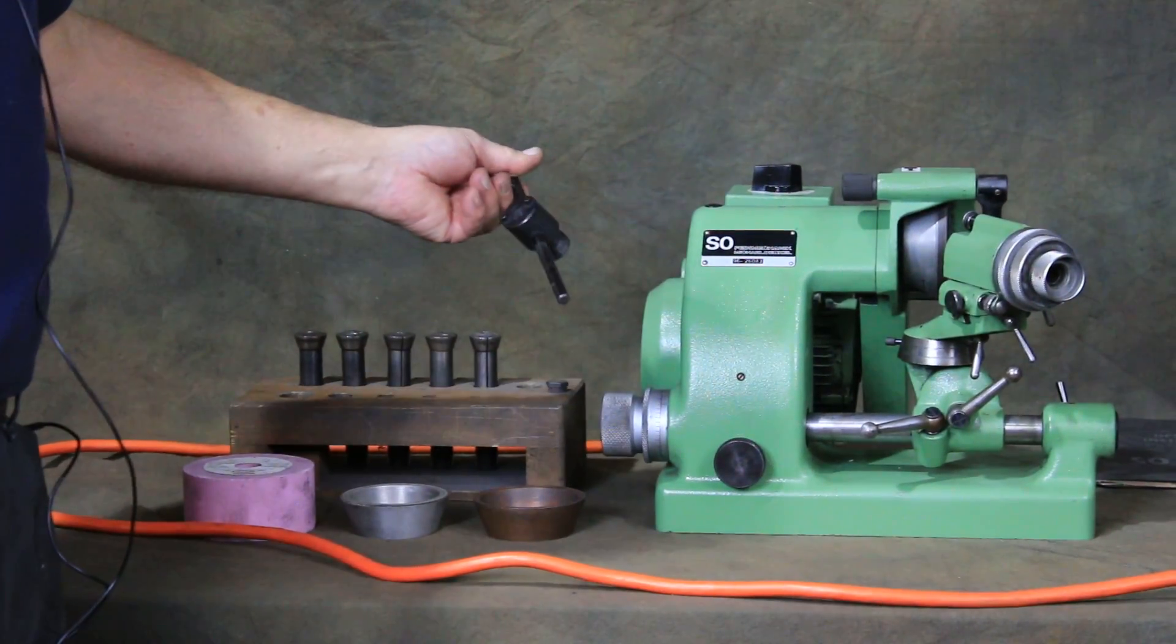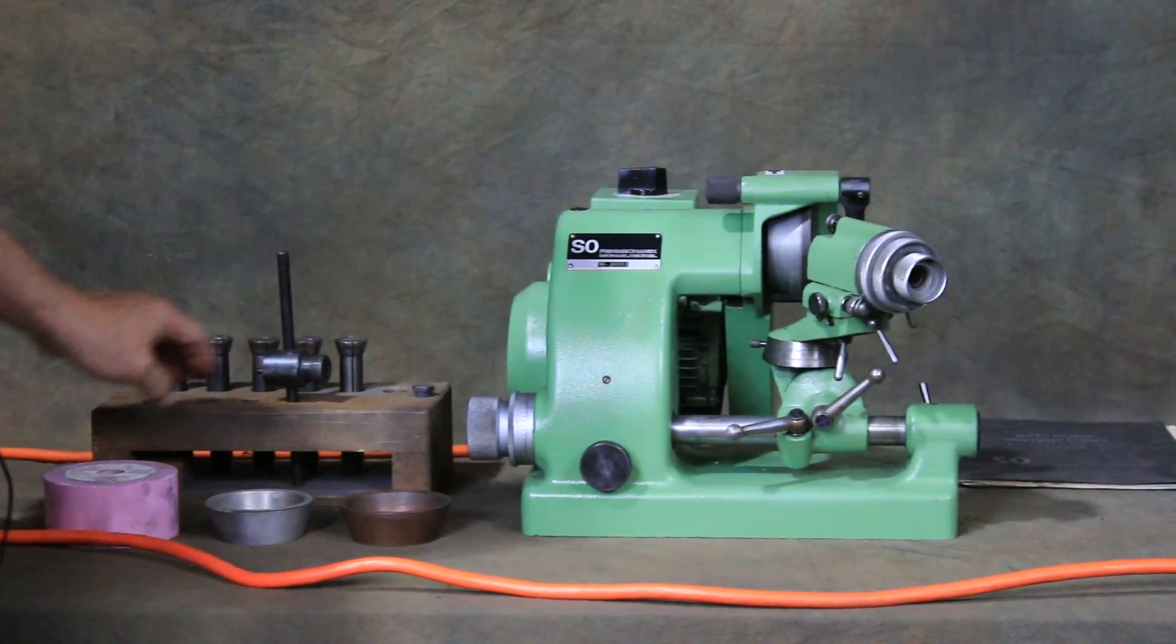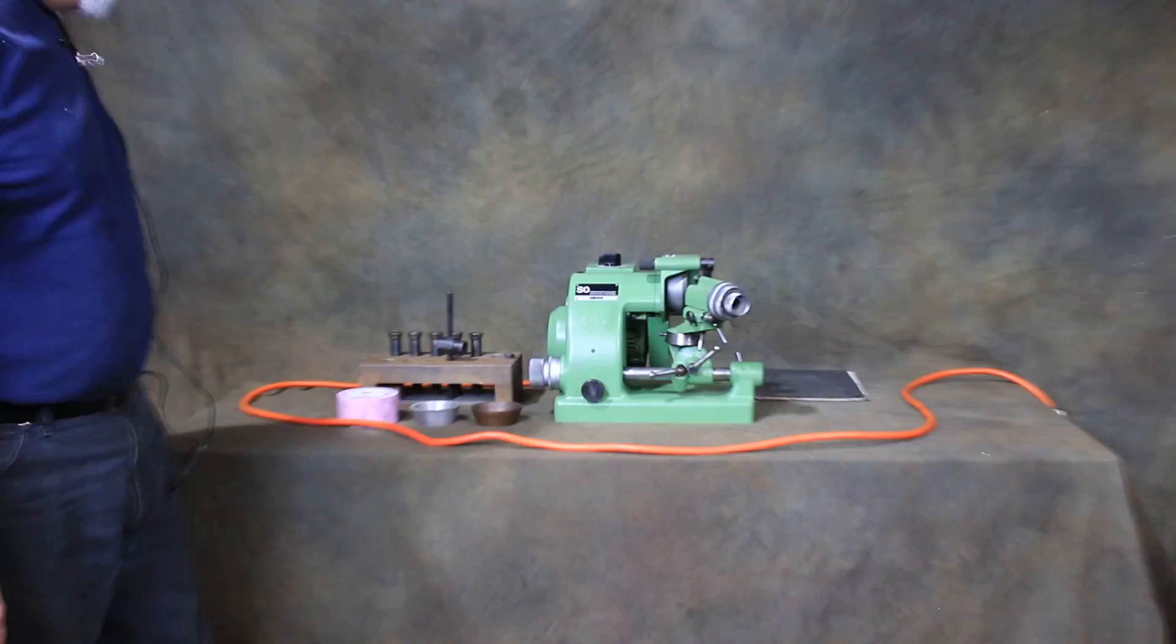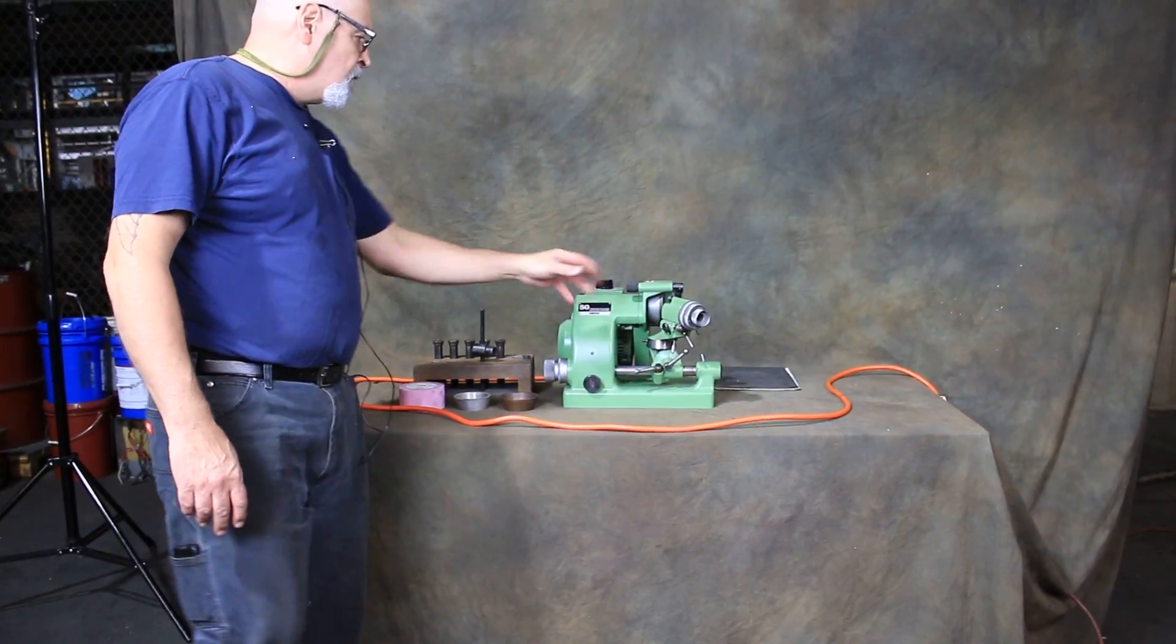It comes with a special tool to remove the grinding hub from the spindle and an assortment of Dekel collets, including the collet that's currently in the head.